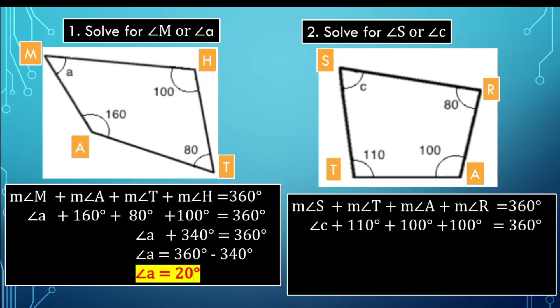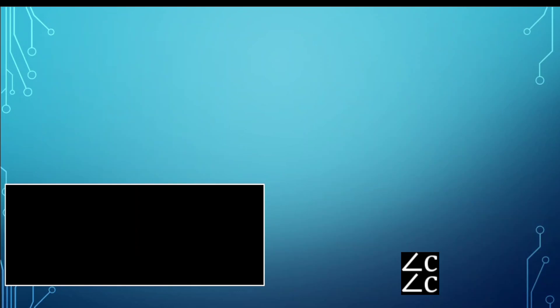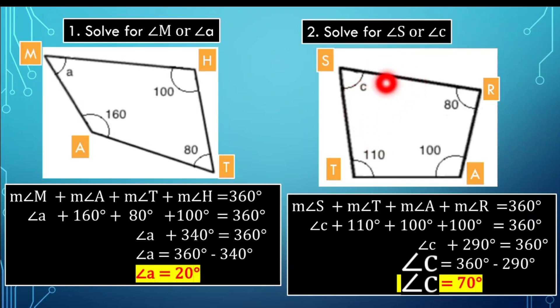Substituting, we have angle S plus 110 plus 100 plus 100 equals 360 degrees. So we're looking for the measure of angle S. Combining the known values gives 290. That 290 will be transferred to the other side, applying the subtraction property of equality. Therefore, angle S equals 360 minus 290, a total of 70 degrees. So the measure of angle S is 70 degrees.